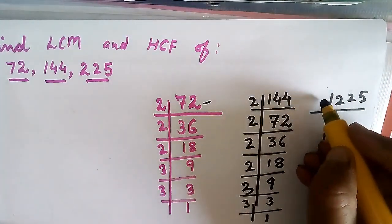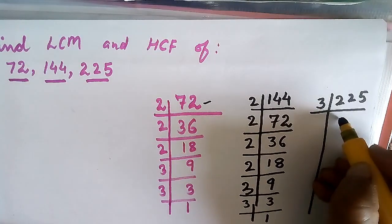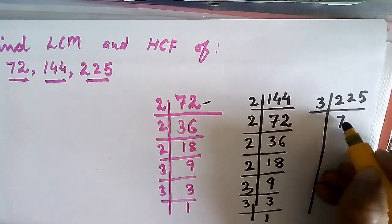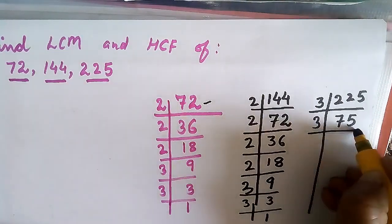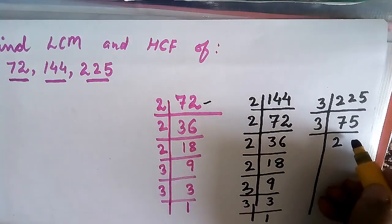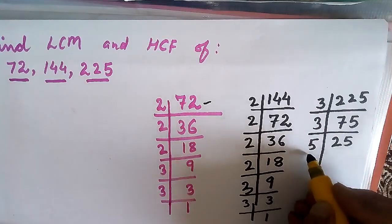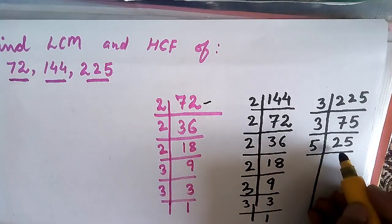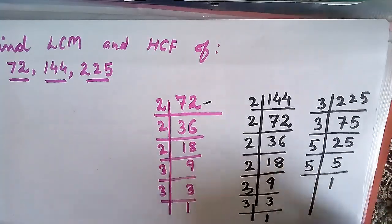For 225: 3 times 75 gives 225, divide by 3 to get 25, then 5 times 5 gives 25, divide by 5 to get 5, and 5 divided by 5 gives 1. So the factorization of 225 is complete.